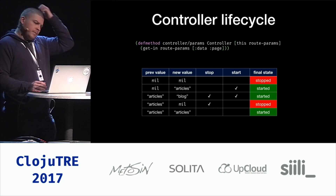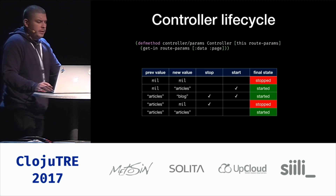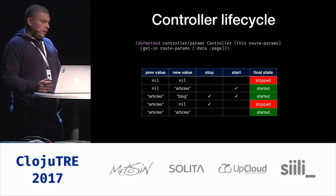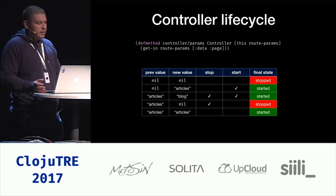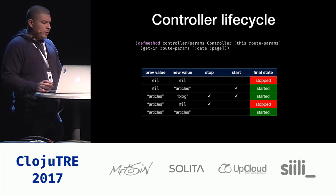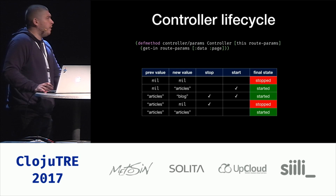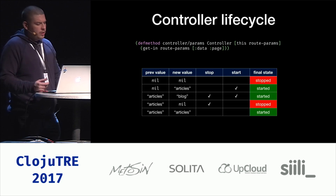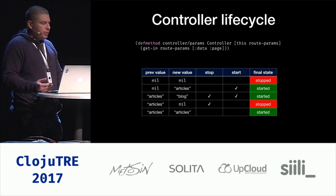For example, if we had a controller that would be active only with page params present in the route, this table shows how decisions would be made in the controller manager layer. If params returns nil then nil again, the controller stays stopped. If it goes from nil to a value — articles in this case — the controller manager starts the controller. If you go from articles to blog, so the value changes, it will stop the old instance and start a new one. If you go from articles to nil, it stops the controller. And if the value is the same as before, the controller is left alone.